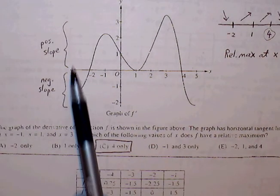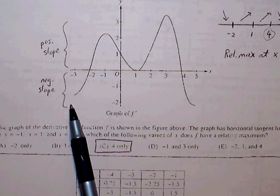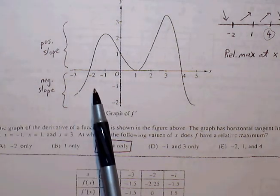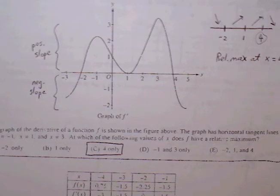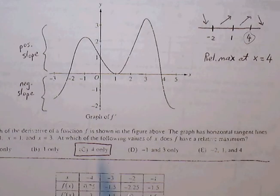X-intercepts represent where slope is 0. Anything above represents positive slope. Anything below the x-axis represents negative slope. So we can create a sign line and use the sign line to help us determine where the relative max will be.